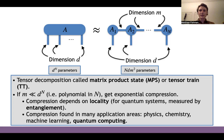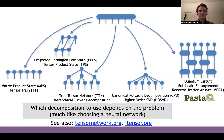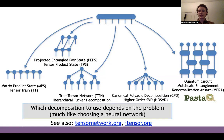If the internal dimension m is much smaller than d^n — for example, polynomial in n — then we get an exponential compression. This doesn't always happen, but this exponential compression does occur in a variety of application areas in physics, chemistry, machine learning, and quantum computing. The matrix product state is only one type of tensor network; there are many different tensor networks for different applications. You choose your tensor network based on your application, similar to how you choose a neural network architecture depending on your problem.